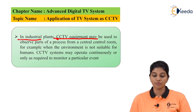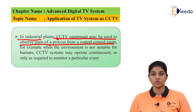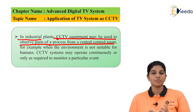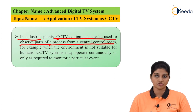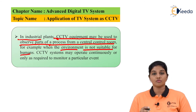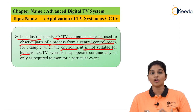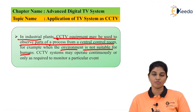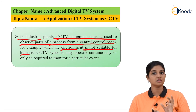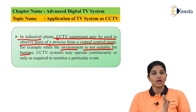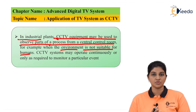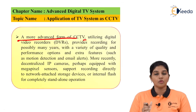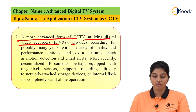In industrial plants, CCTV equipment may be used to observe parts of a process from a central control room, making it possible to monitor operations without allocating a person to that particular area. For example, in a gas industry environment not suitable for humans — where the environment is filled with gas — CCTV plays an important role by observing and monitoring the process going on inside the gas chamber, allowing the user to monitor it continuously.